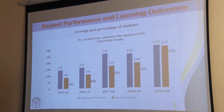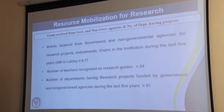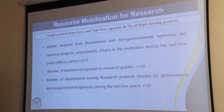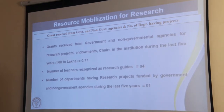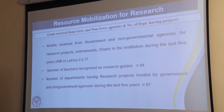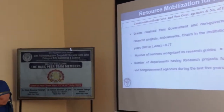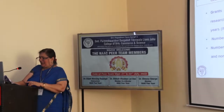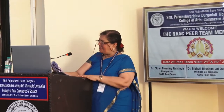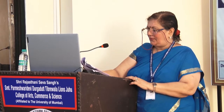We have mobilization for research. Grants received from government and non-governmental agencies for research projects and government chairs during the last five years total 77,000. The number of teachers recognized as research guides in our college is four. The number of departments having research projects funded by government and non-governmental agencies during the last five years is one.